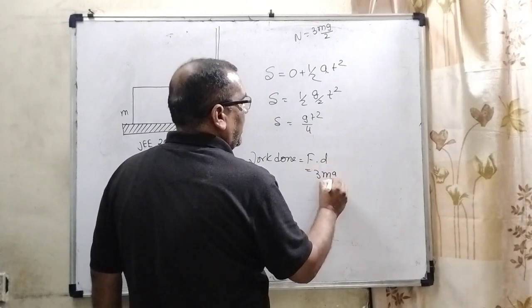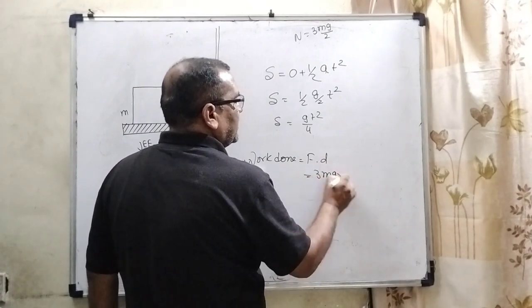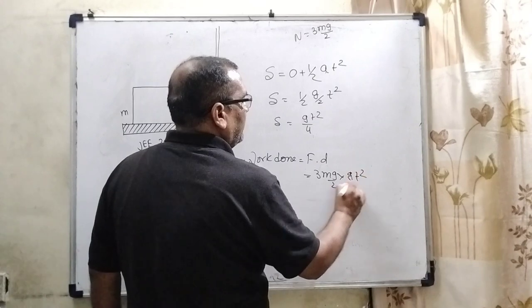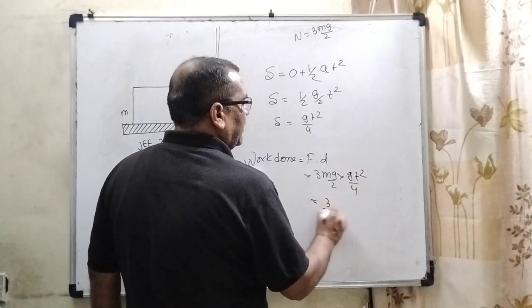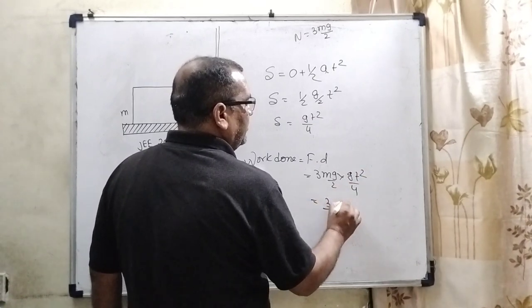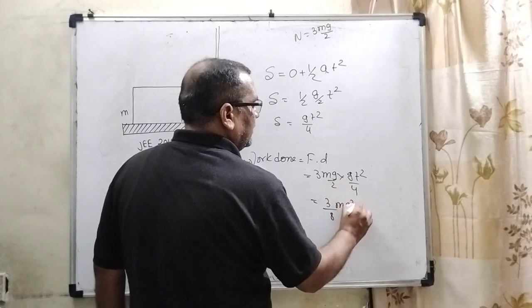What is the normal reaction? That is 3mg/2. And what is the displacement? gt²/4. Then we get 3mg²t²/8.